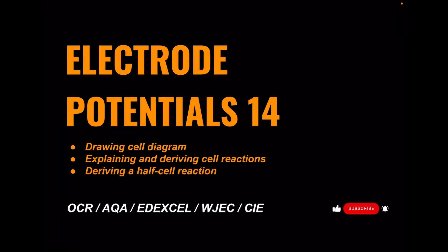Got another exam question walkthrough for A-level chemistry. This is number 14 in the Electrode Potentials playlist. The question deals with drawing a cell diagram, explaining and deriving cell reactions, and deriving a half-cell reaction.